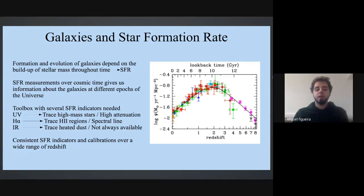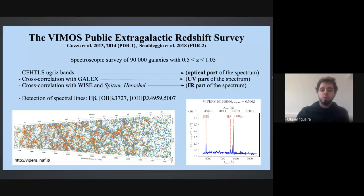For instance, we have ultraviolet bands which trace directly high mass stars but suffer from high attenuation. We have the H-alpha line which traces H II regions created by high mass stars, but this is a spectral line, so we need a spectroscopic survey which is not always available. We have infrared tracers which trace dust heated by massive stars, but this is not always available. For instance, we don't have Herschel or Spitzer measurements for every galaxy. The resolution of WISE above certain redshift is not enough to compute star formation rate properly. Moreover, we need consistent star formation indicators and calibration over a wide range of redshifts.